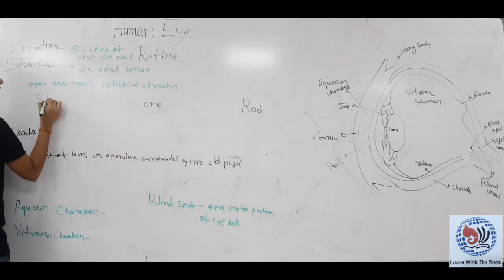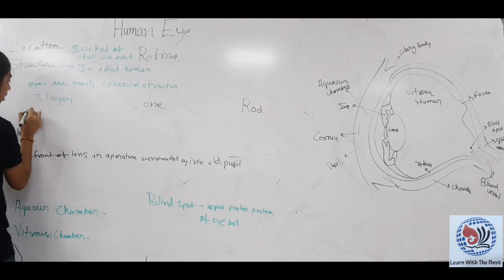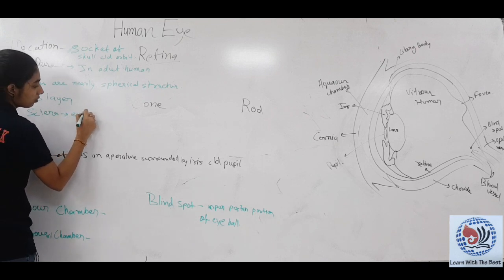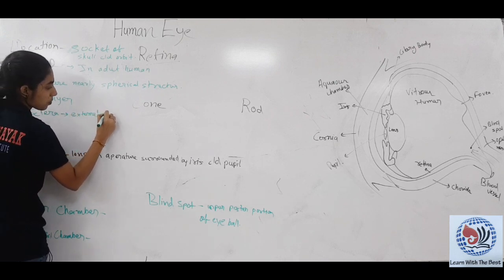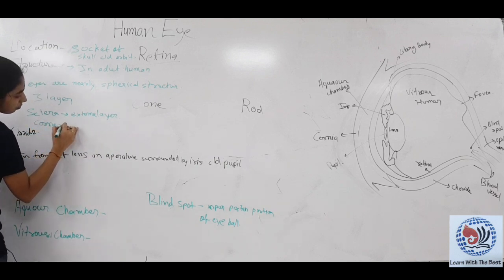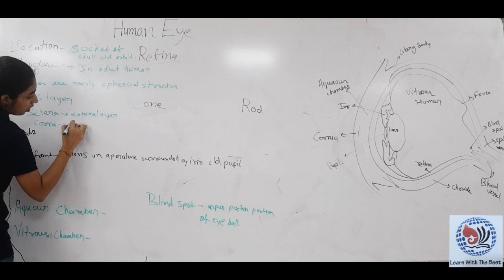The three layers are: sclera is the external layer, cornea, and choroid which is the middle layer.